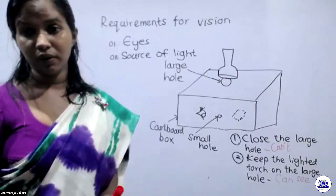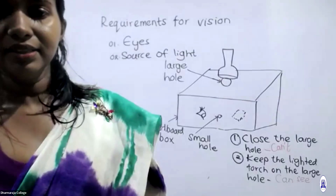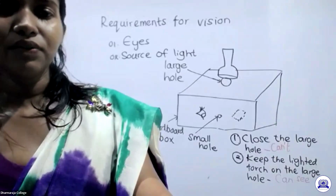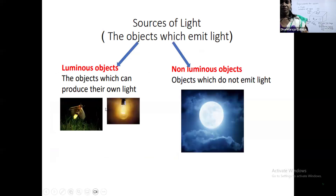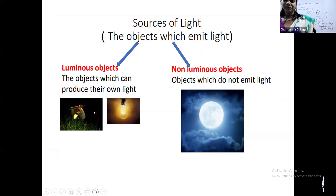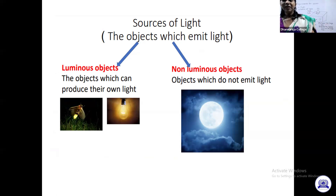So for vision, there are two requirements. The first one is your own eyes, and the other one is there should be a source of light. The second requirement is a source of light. There are two requirements for vision: first, eyes, and next, a source of light. Now we are going to learn about the sources of light.